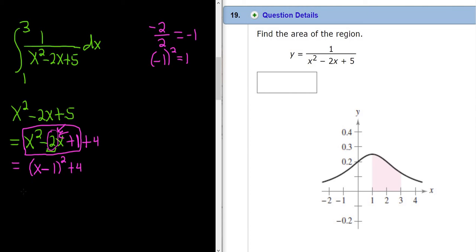So now we can go ahead and rewrite our integral. So we have the definite integral from 1 to 3 of 1 over, and we have x minus 1 squared plus 4 dx. All right, let me scroll down.